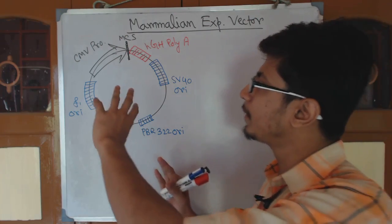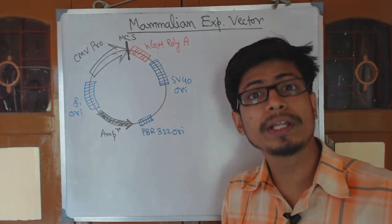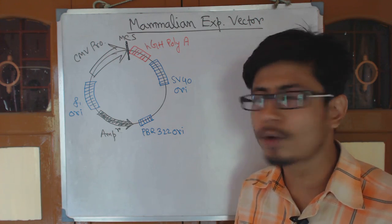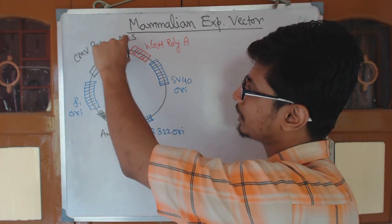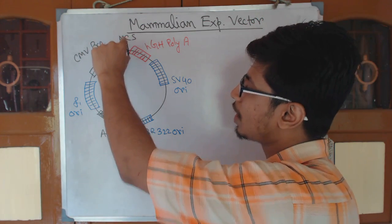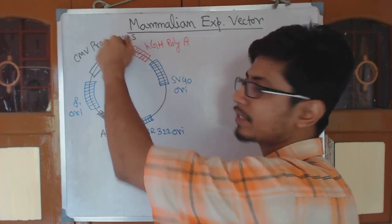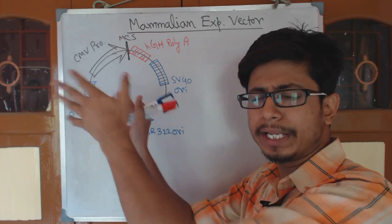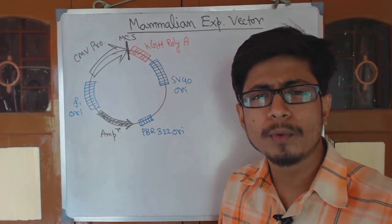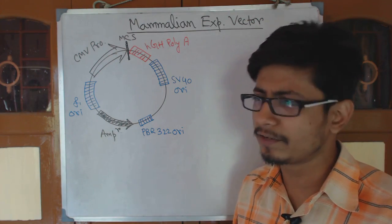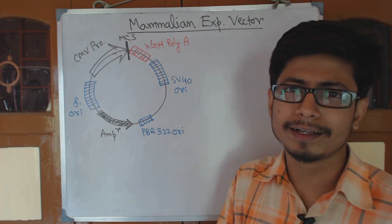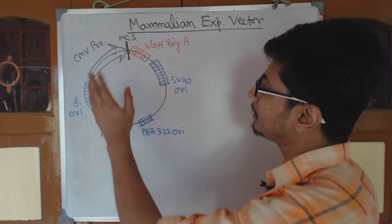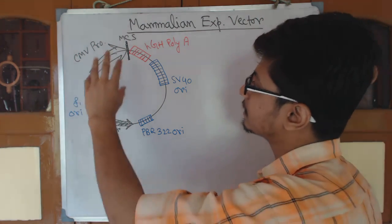The vector also requires a multiple cloning site for any type of cloning. We have a multiple cloning site at the top where restriction enzymes can cleave and attach your DNA of interest — this works similarly to normal bacterial cloning.